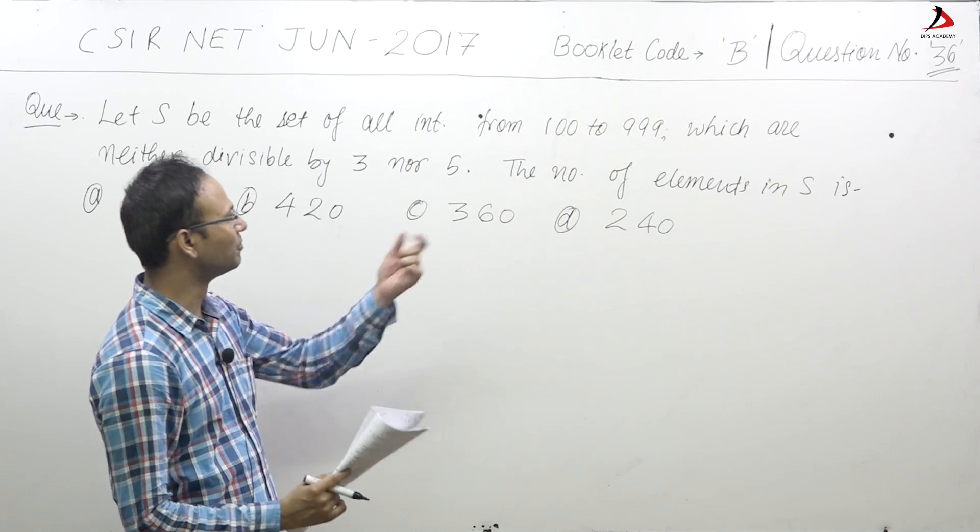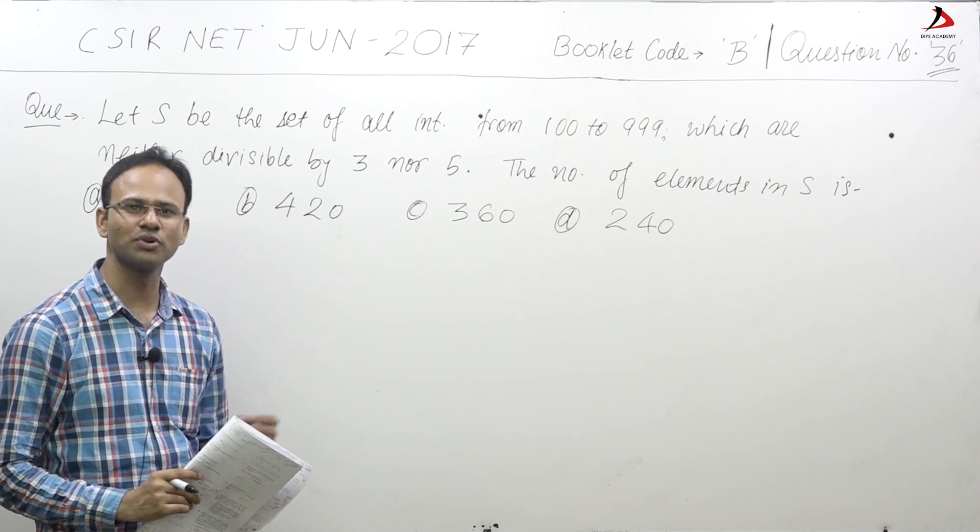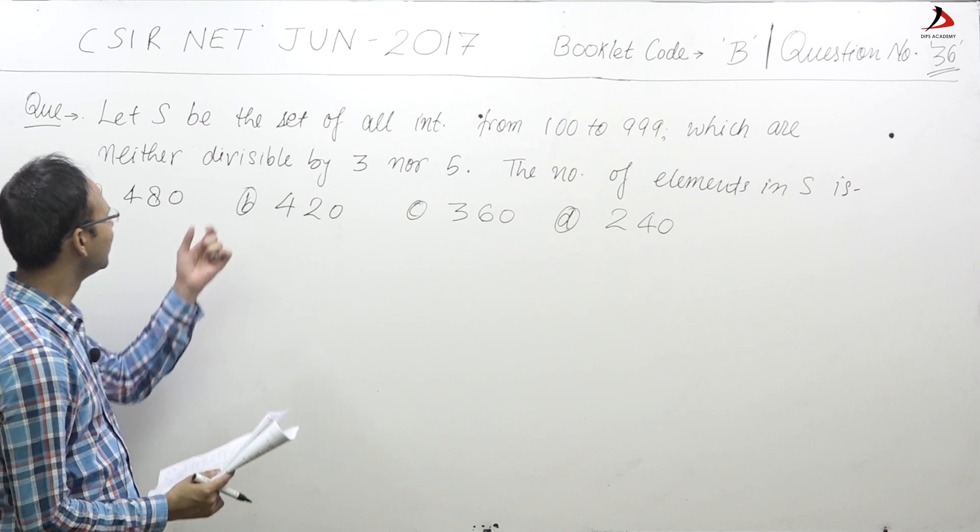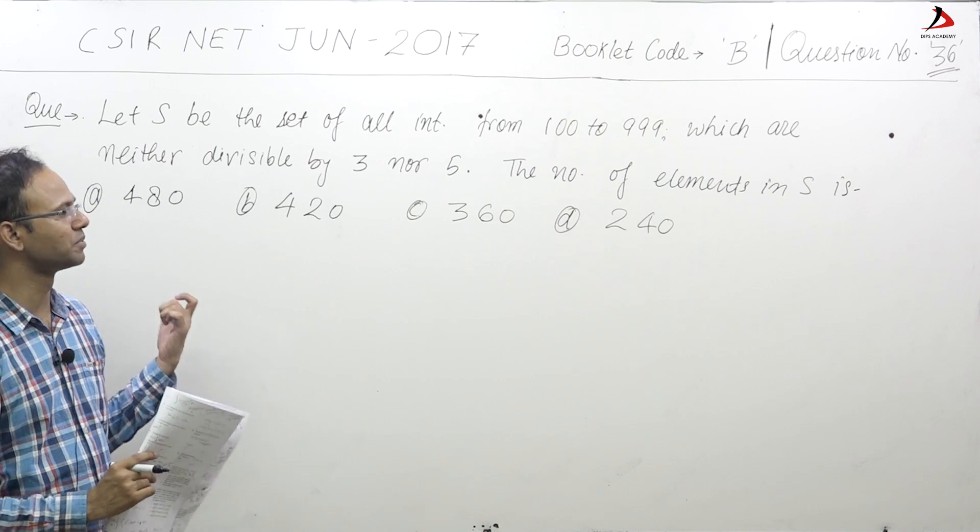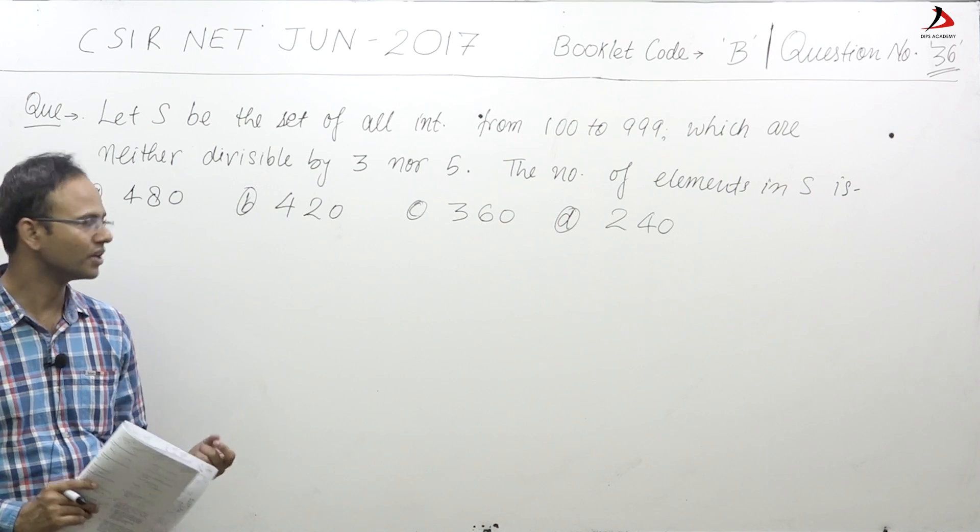Let's take one more question from booklet B, question number 36. The question says: let S be the set of all integers from 100 to 999 which are neither divisible by 5 nor 3. Find out the number of elements in S.